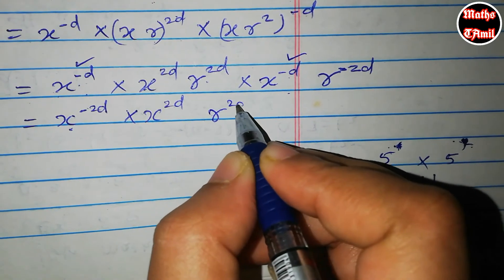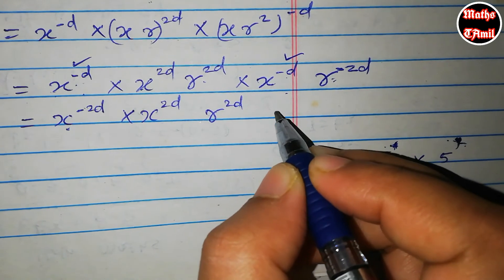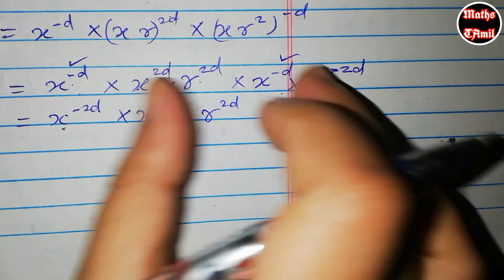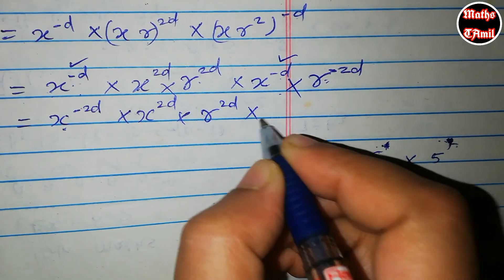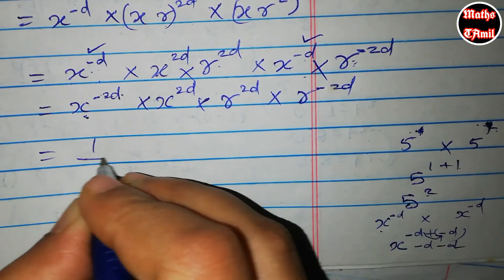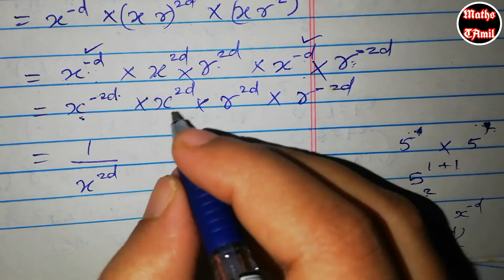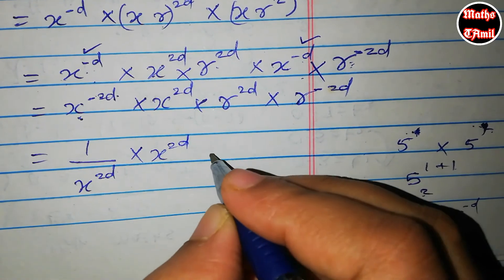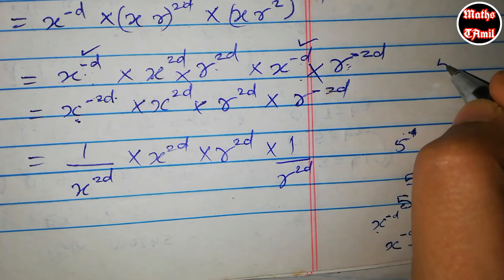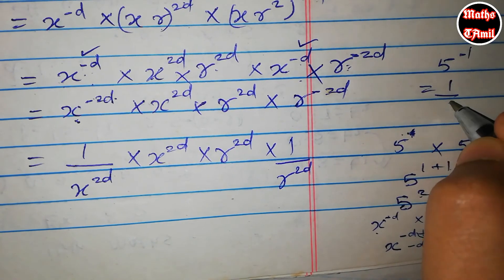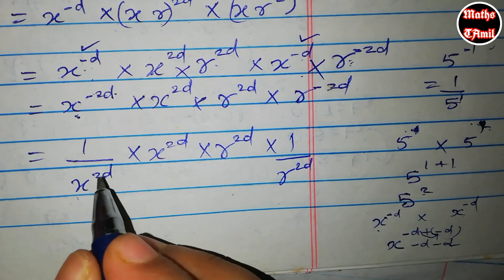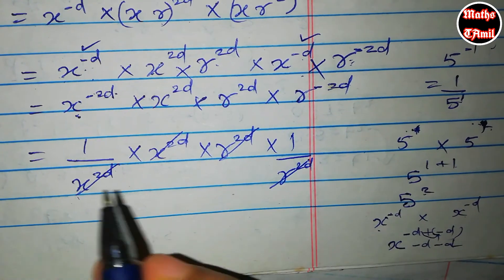This is R to the 2D times R to the minus 2D. R to the 2D divided by R to the 2D equals R to the 0, which equals 1. So X to the 0 times R to the 0 equals 1 times 1, which equals 1.